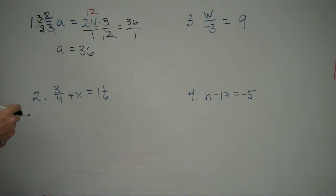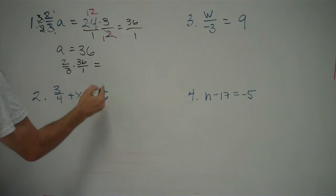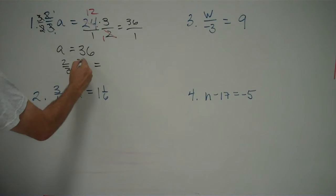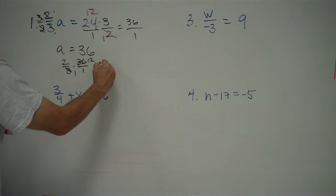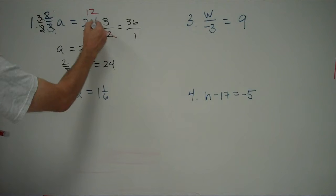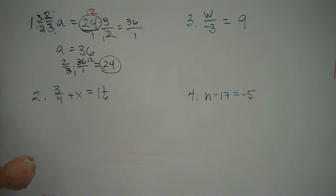It's always a good idea, when you finish these problems, to take your a, take the value for a, put it back in the original equation, and make sure, does this really work? Well, let's see. 2 thirds times 36, I'll write that as 36 over 1, equals 36 over 3. I know what that is. That's 12 over 1. And I end up with 2 times 12, which is 24, over 1 times 1, which is 1, and 24 over 1 is just 24. So, yes, it works. 24 equals 24. That's the first one.